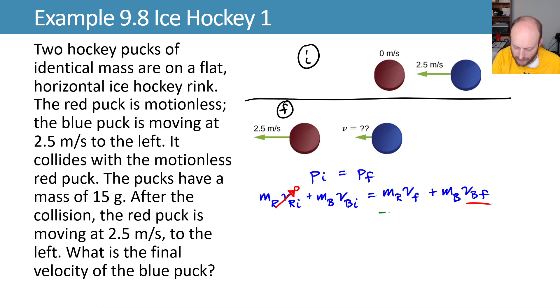We'll do a little bit of algebra, subtract MRVF from both sides so that we can try and get the VBF by itself and we'll rewrite it here. MBVBF is equal to MBVBI, and actually I should probably have called this VRF. Let's go and retcon our way into a VRF because we have the red final and the blue final.